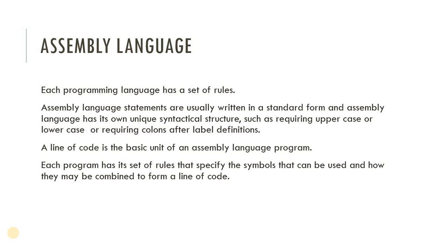Similarly, assembly language statements are written in a standard form. Assembly language has its own unique syntactical structure, such as requiring uppercase or lowercase letters, or requiring colons after label definitions. A line of code is the basic unit of an assembly language program. Each program has its own set of rules specifying the symbols that can be used and how they may be combined to form lines of code.